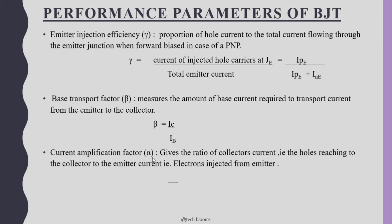Next is the current amplification factor, alpha (α), which gives the ratio of the collector current to the emitter current: α = IC / IE. Since not all majority carriers injected from the emitter reach the collector — some recombine in the base region — IE is always higher than IC. Therefore, alpha is always less than one.